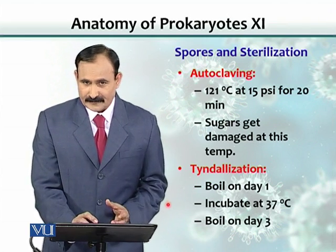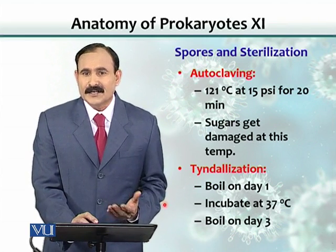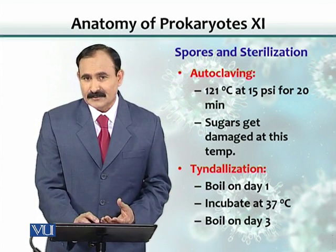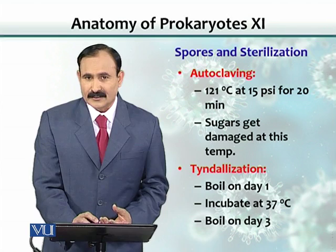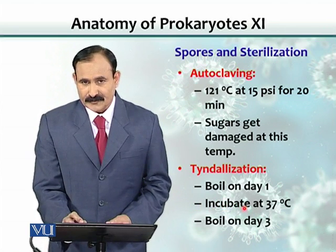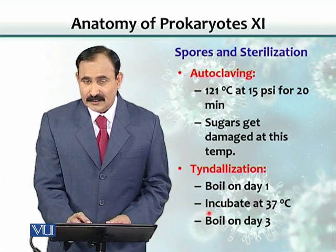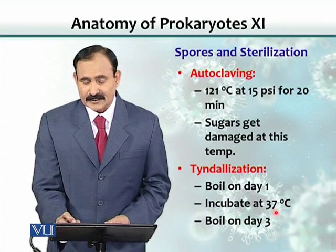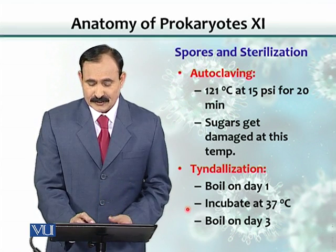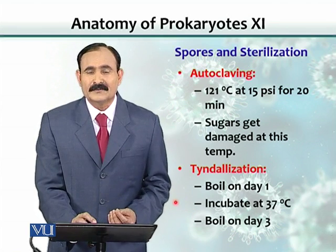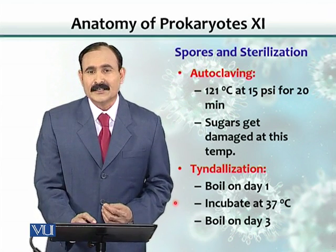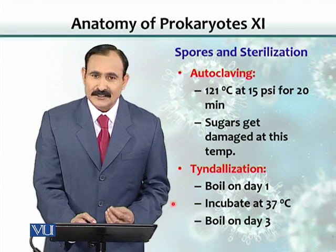Boiling and then cooling — boiling kills all the vegetative forms present in the sugar solution, but boiling does not kill spores. When you incubate this boiled and cooled solution at 37 degrees Celsius, all those spores start germinating and convert themselves into vegetative forms, which are easy to kill.